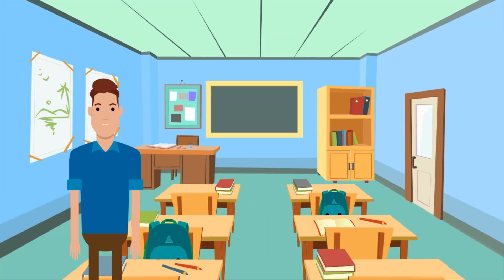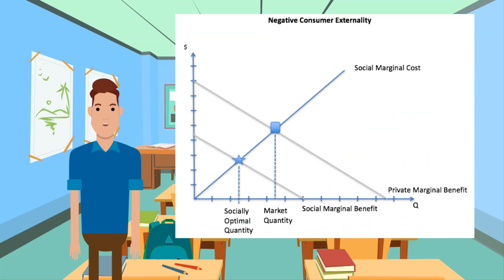First, let's look at negative consumption externalities. A good example of this is antibiotic resistance. Looking at it on a graph, we can see that the market is demanding too much of a good. In this case it is antibiotics, and is used commonly in farming. The socially optimal use of antibiotics is much lower to combat antibiotic resistance.